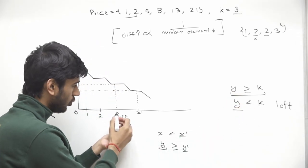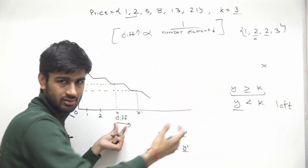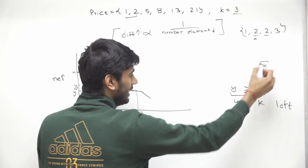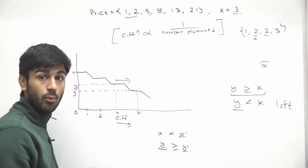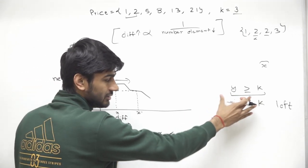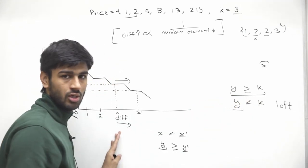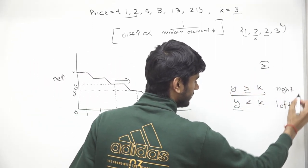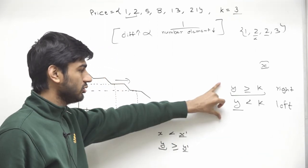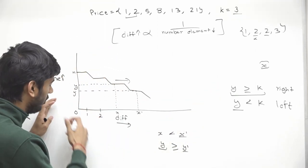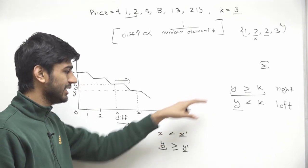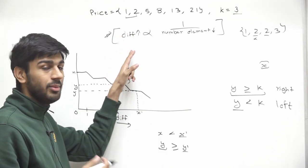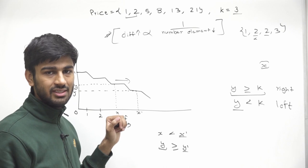Whenever the condition y >= k is true, we store the current difference x as a potential answer and move right to find an even larger valid difference. Based on this relation, the search space is monotonic and we can apply binary search. The challenge is computing how many elements we can pick from the array for a given difference value.